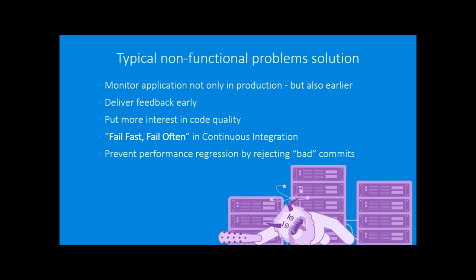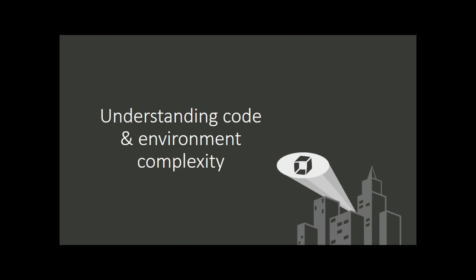Early feedback is really super important. It's also important to fail fast and fail often — it's not a goal to always have a green build. We want the build to be broken as often as it needs to be, because we care about performance and don't want any performance degradation. This helps prevent bad commits from getting merged to the master branch, and understanding code and environment complexity is really important.